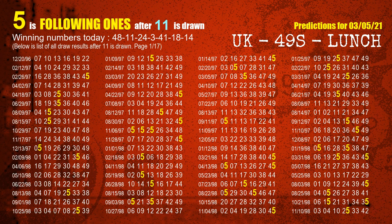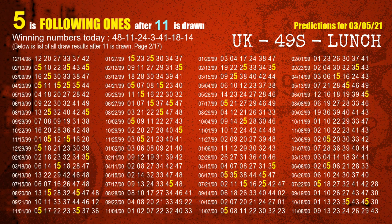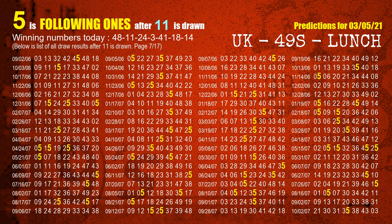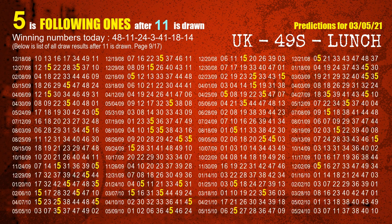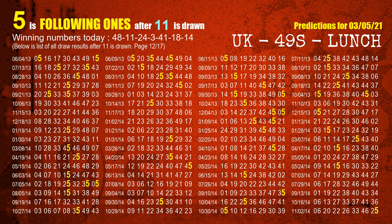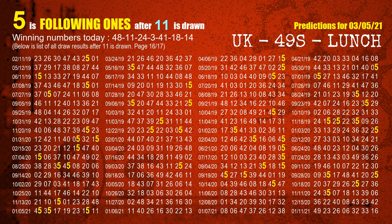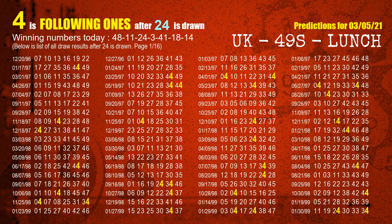The second winning number is 11. The most frequently following units digit is 5 when 11 is the winning number in the last draw. The third winning number is 24. The most frequently following units digit is 4 when 24 is the winning number in the last draw.